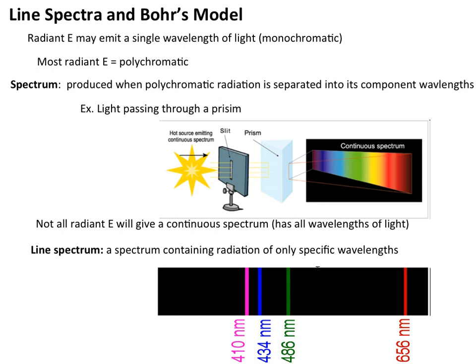Not all radiant energy is going to behave like radiant energy coming from the sun — not all will give a continuous spectrum. When that is the case, we end up with something called a line spectrum. A line spectrum is a spectrum containing radiation of only specific wavelengths. This characteristic is what led Bohr to some of the conclusions he made about the hydrogen atom.